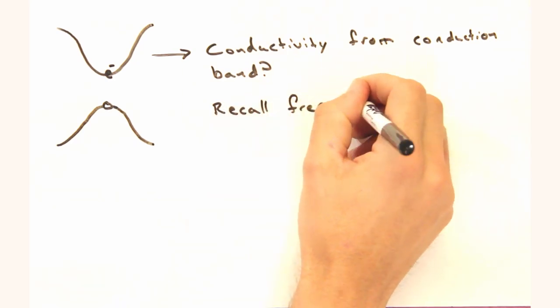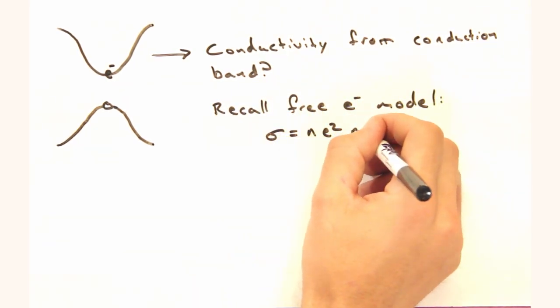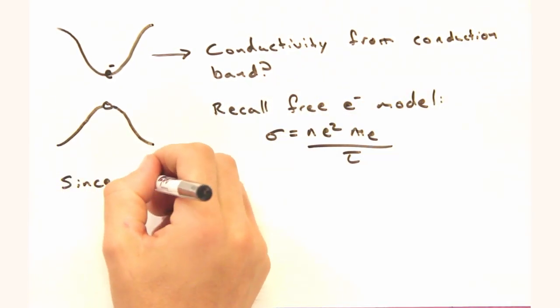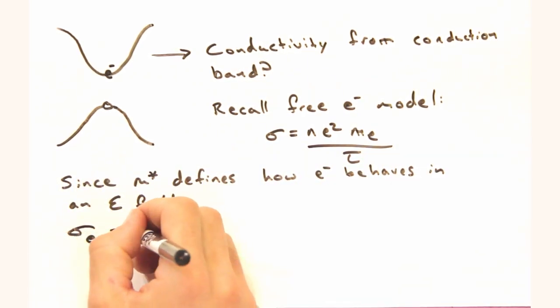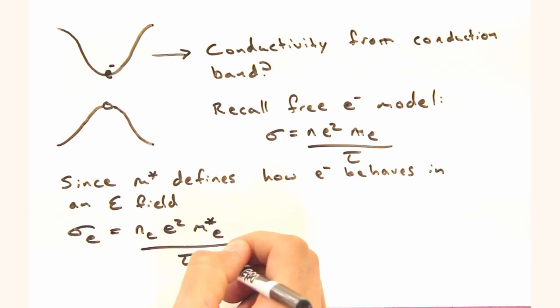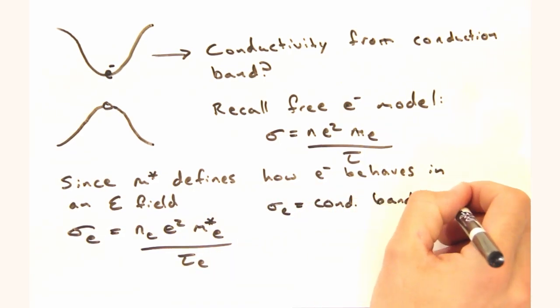Yeah. Remember we developed the expression for conductivity for the free parabolic electron. We found that conductivity equals the number of free electrons times their charge and effective mass, divided by the relaxation time between collisions.